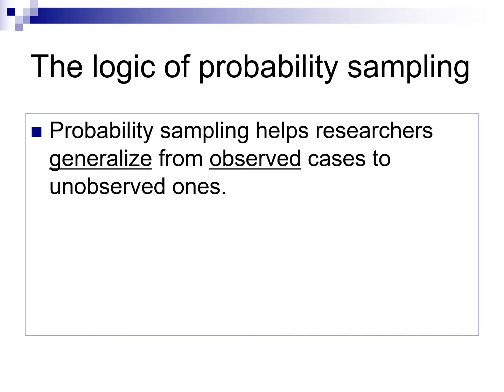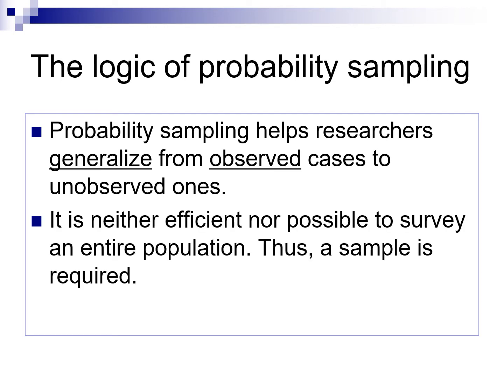Sampling is based on the logic of probability sampling. The goal is to generalize from observed cases to unobserved cases — from a small group to a big group. In most cases it's not cost-effective nor even possible to sample an entire population. Therefore we sample and then make inferences from the sample using statistics to a broader population. The question is what type of sample is most appropriate, which depends on what a researcher is trying to study.